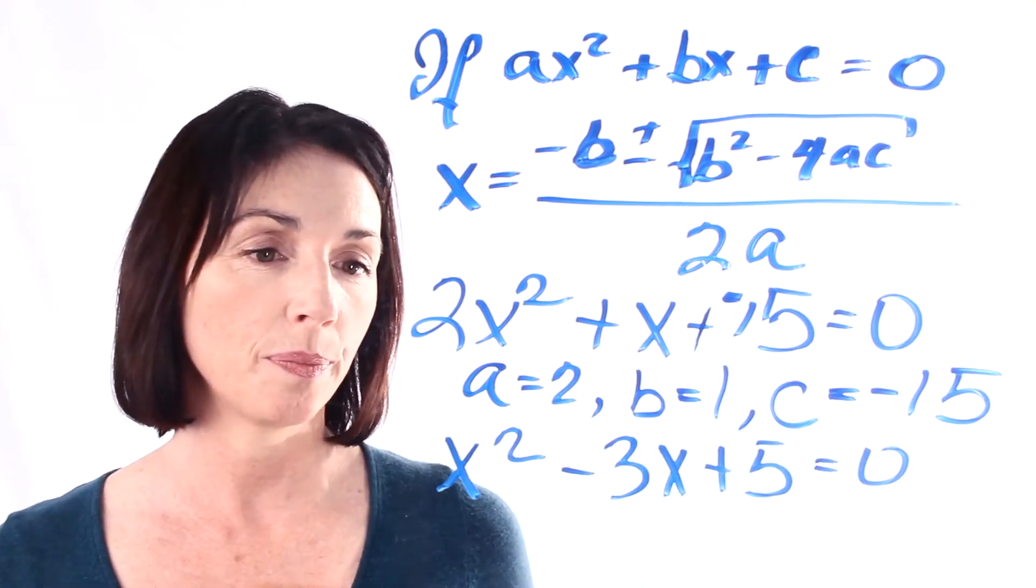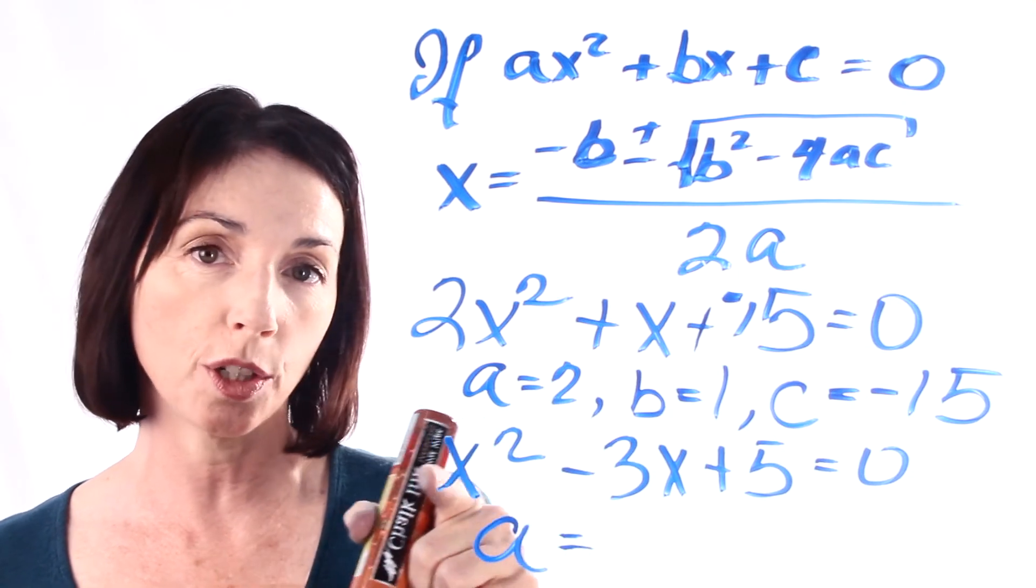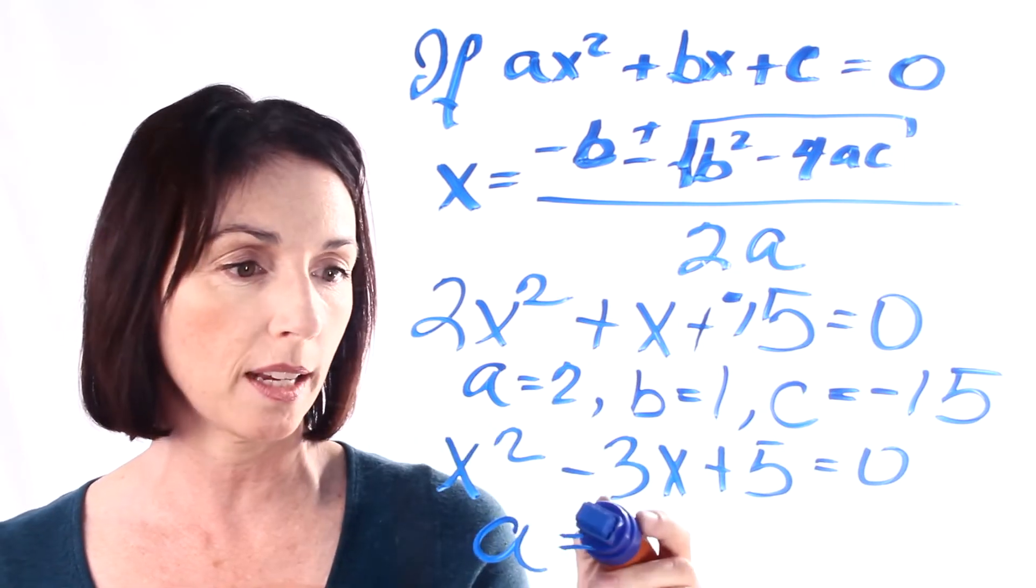Now what about this one down here? a, the coefficient of the x squared term, is just 1. Because 1 times x squared is equal to x squared.